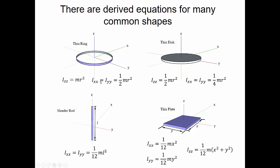We can also find the mass moment of inertia about other axes. For a thin ring, the mass moment of inertia about the X or Y-axis is one-half M·R². For a thin disk, it's one-fourth M·R². For a thin plate, it's one-twelfth M·X² about the X-axis, or one-twelfth M·Y² about the Y-axis.